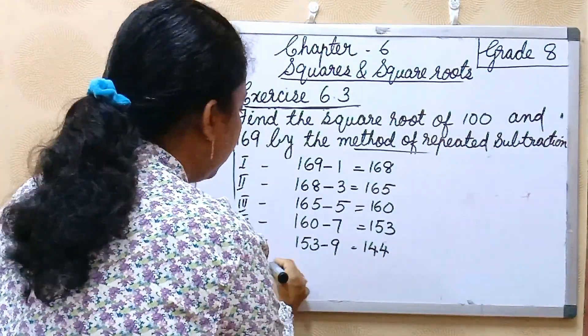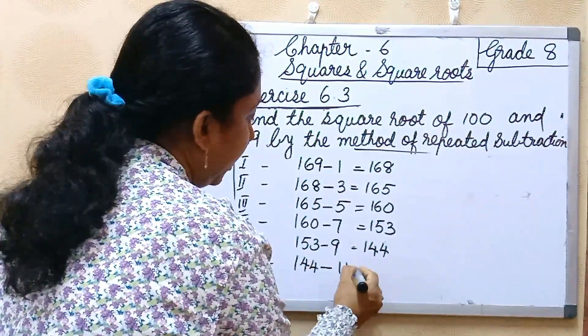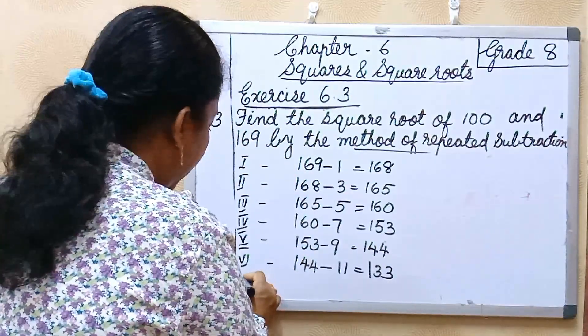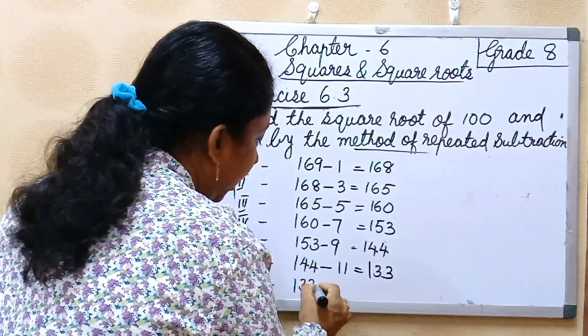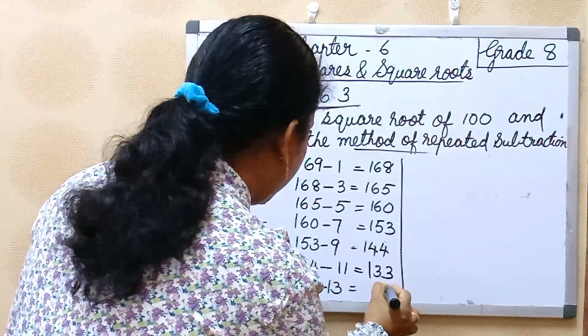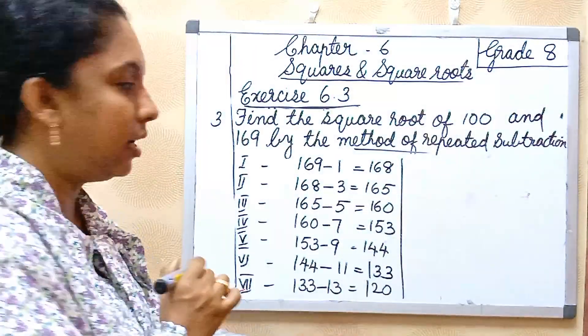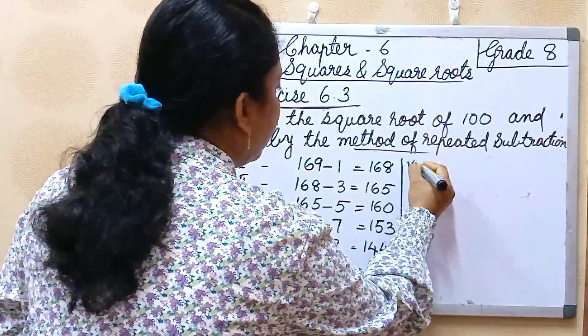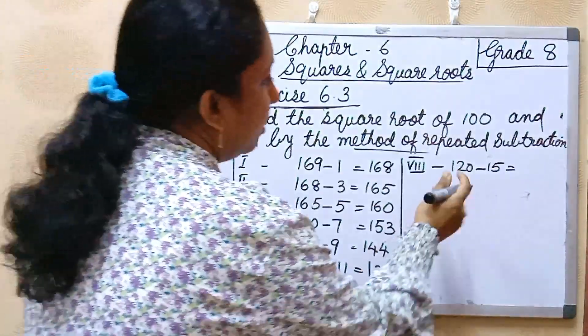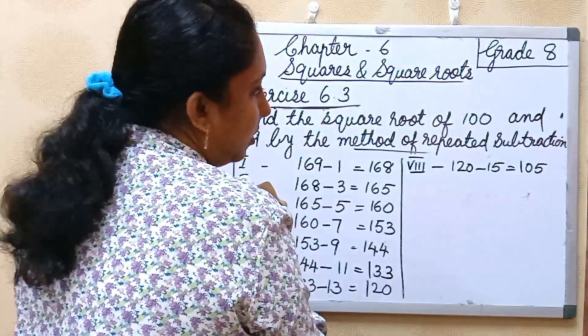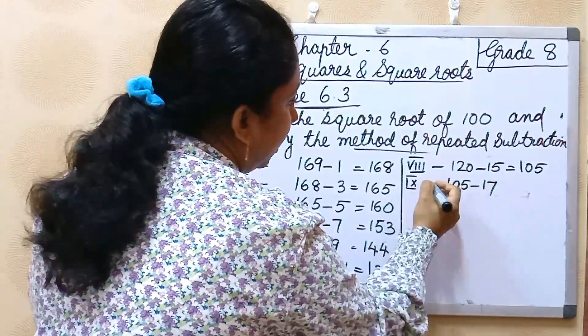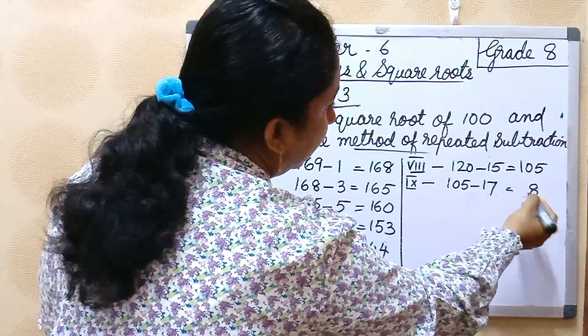Then sixth step, 144 minus 11, next one is 11, so 133. Then seventh step, 133 minus 13, so 120. Then eighth step, 120 minus 15, that is 105. Then ninth step, 105 minus 17, that is 88.